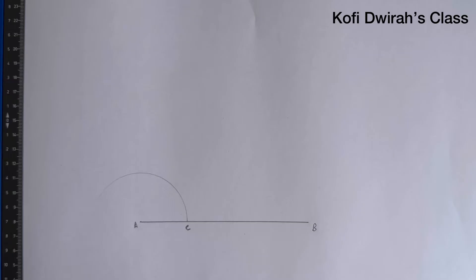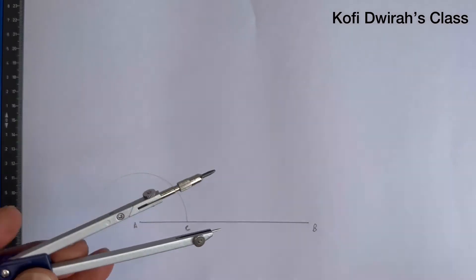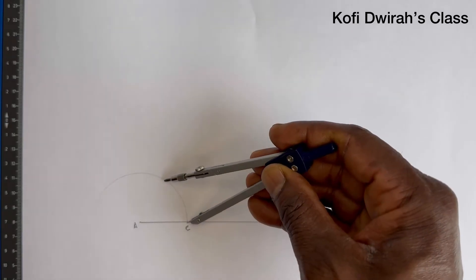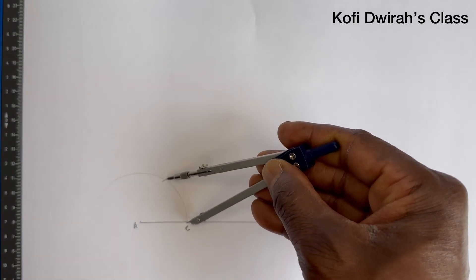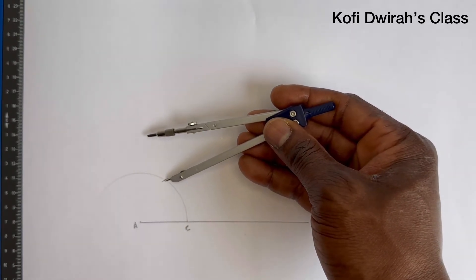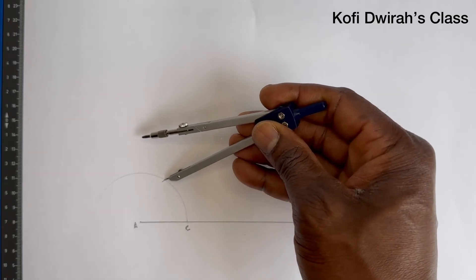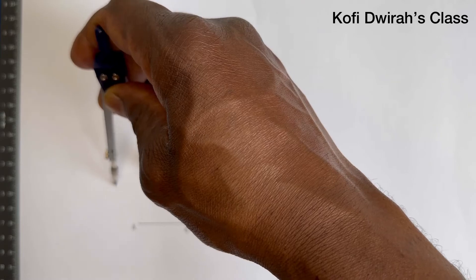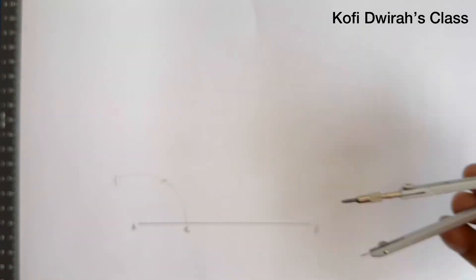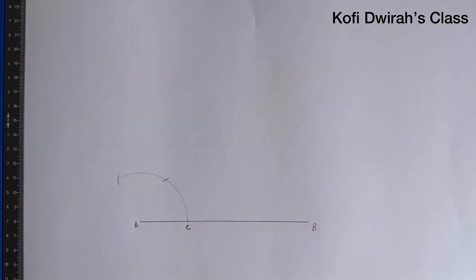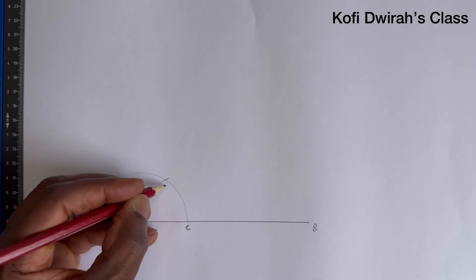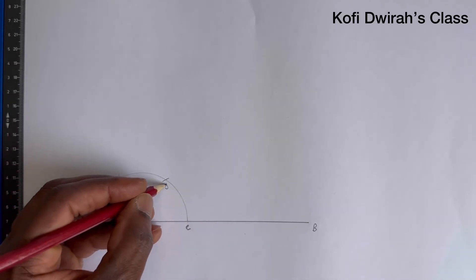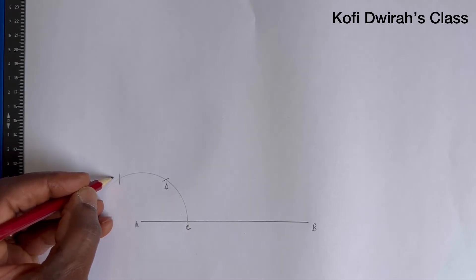Then at point C, with the same radius, you mark here. Same radius, you mark here again. So we have this point to be point D and point E.